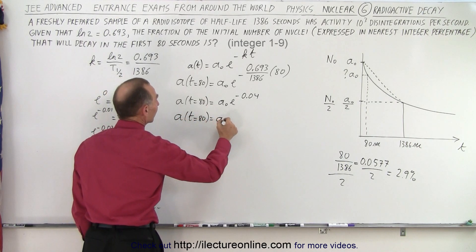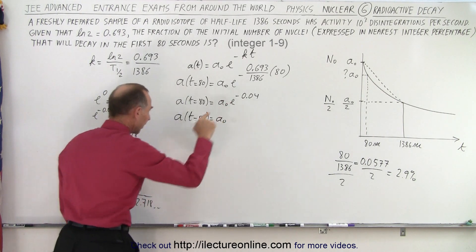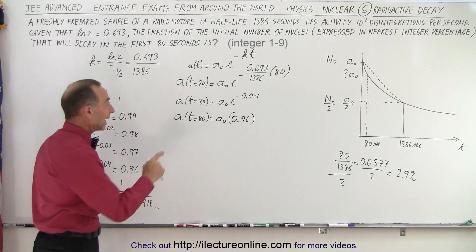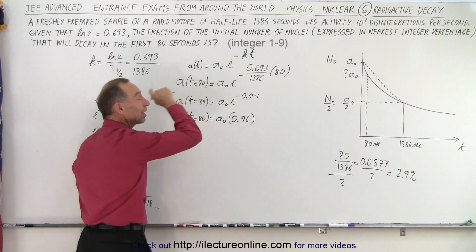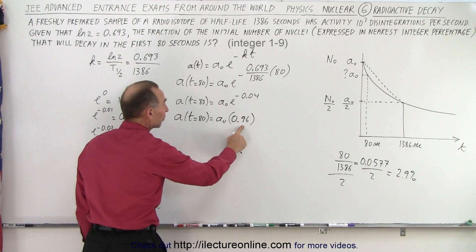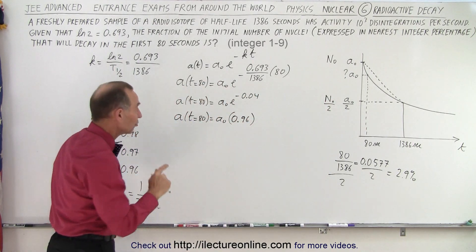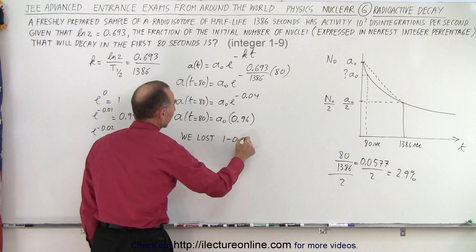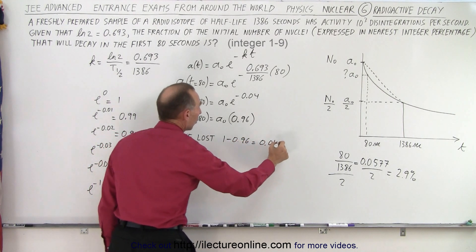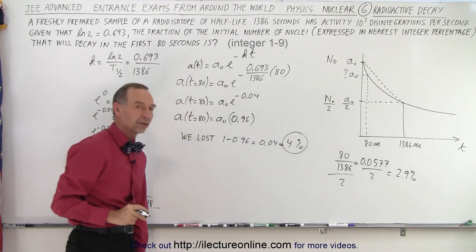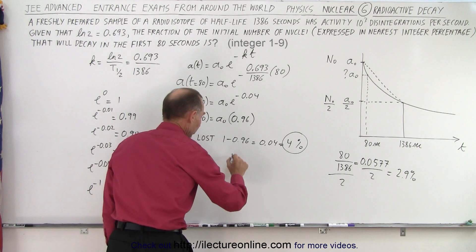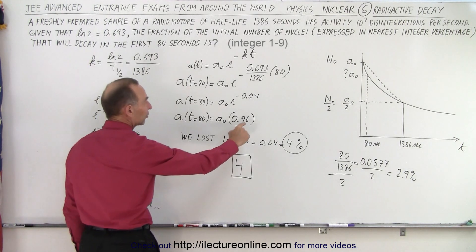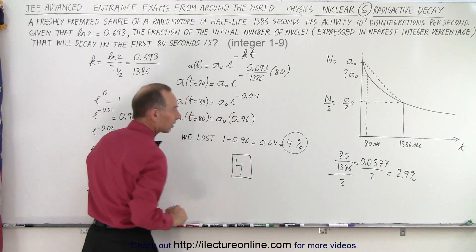Which means that A as t is equal to 80 seconds is equal to A sub 0 times—we're going to get rid of the e—e to the minus 0.04 is equal to 0.96. So in other words, after 80 seconds we're down to 96 percent of the original activity, or we're down to 96 percent of the original number of radioisotopes, which means that we lost 1 minus 0.96, or 0.04, or four percent of the original amount. And so the answer is four, because we're looking for integer number of percentage points of the original amount that we have lost. If we're down to 96 percent, we've lost four percent, and that's the answer they're looking for.